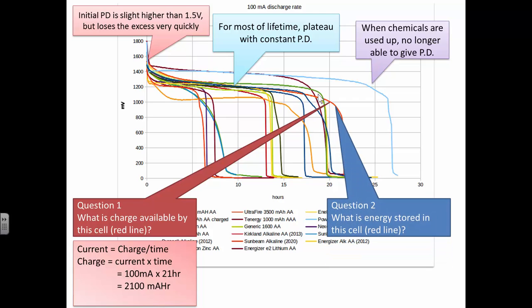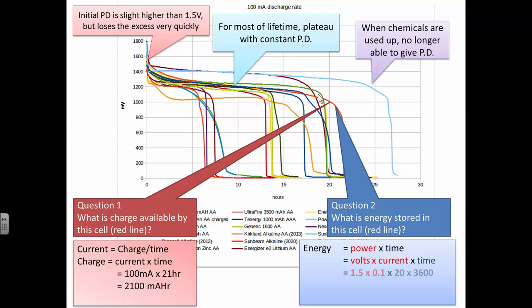Second question. What is the energy stored in this cell? Here again you need the data booklet to find an appropriate equation. Energy is equal to power times time. And we know that the power is equal to the current times by the voltage. So volts times current times by time. The volts is 1.5 roughly. The current is 0.1A. And the time in SI units is going to be 20 hours times by 3600. It gives a total energy of 10,800 joules in the lifetime of that battery.